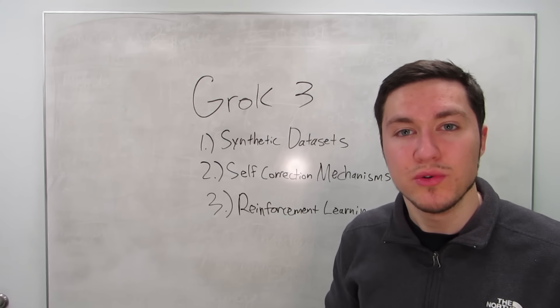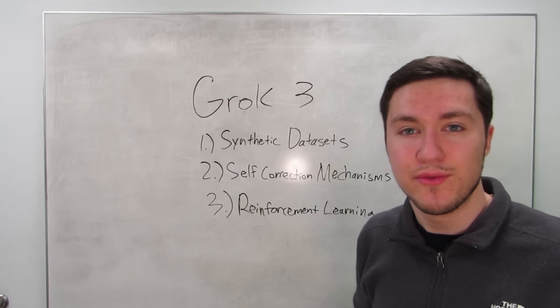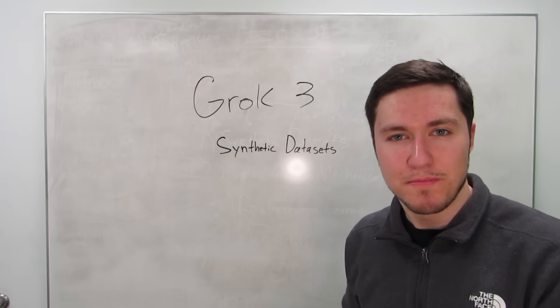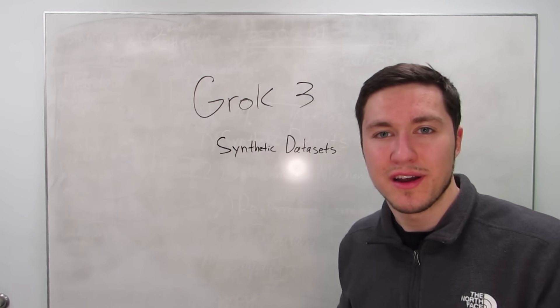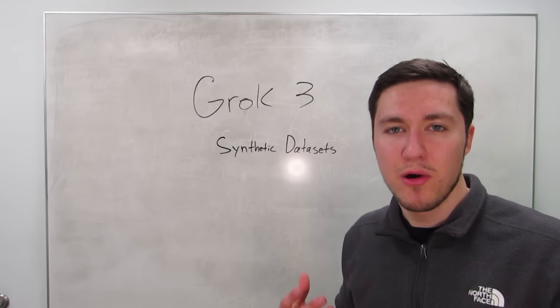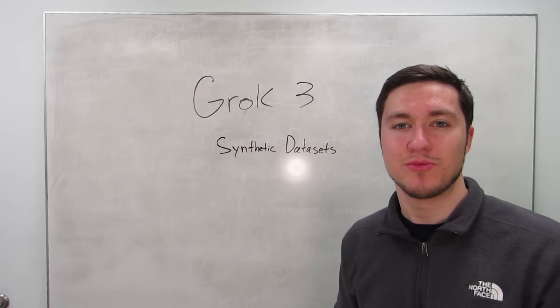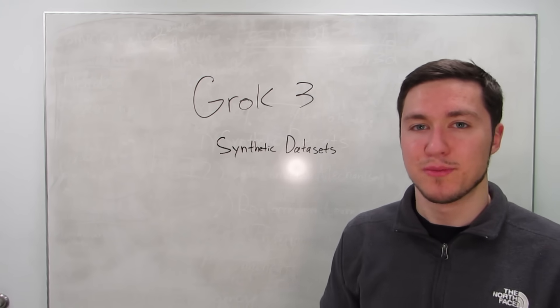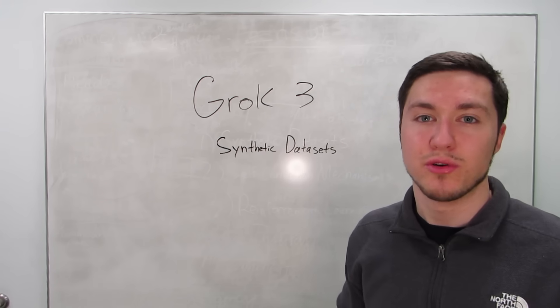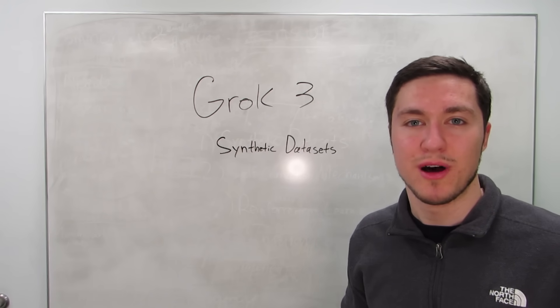So how is Grok 3 able to do all that? Well, the three main concepts that were used in its training process were the use of synthetic datasets, self-correction mechanisms, and reinforcement learning. So synthetic datasets are basically datasets generated by AI for AI based on real data. The idea is that you want to actually try out the model in a simulated controlled environment, much like how fighter pilots might actually fly a simulated airplane before actually risking someone's life and testing a real plane. So before Grok rolls out to the public, it wants to be able to try its responses on auto-generated datasets to fully test out and stress test how Grok responds in different scenarios.